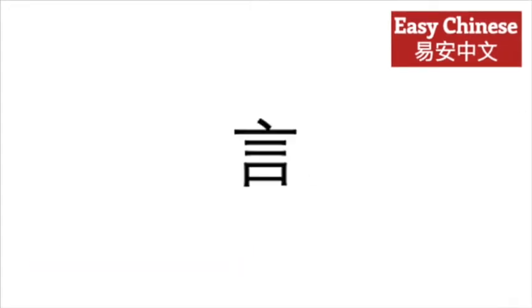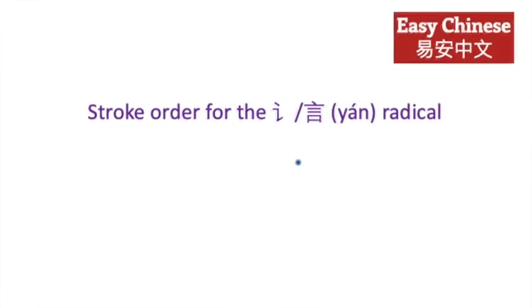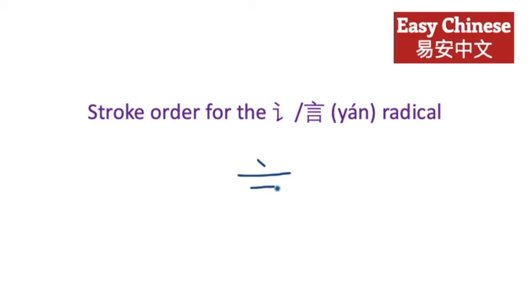Yán is made up of the mouth at the bottom with words coming out of it. The stroke order for the yán radical — yánzì páng — is written this way: yī, èr. And the fuller form: yī, èr, sān, sì.